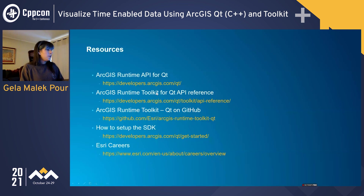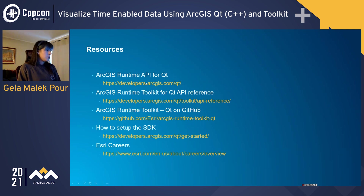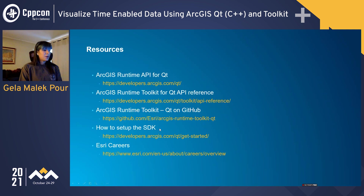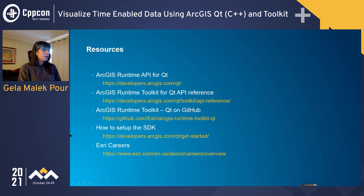I just wanted to go over some resources that will be helpful if you're interested in trying this out yourself. If you want to look up the Qt API and our SDK, you can take a look at developers.arcgis.com. For more information on the toolkit, you can look at the toolkit API reference and our toolkit GitHub repository. If you want to learn how to set up the SDK, we have documentation for Windows, Linux, and macOS. And if you're interested in learning more about Esri or opportunities we have, you can take a look at the Esri Careers website or reach out to me.